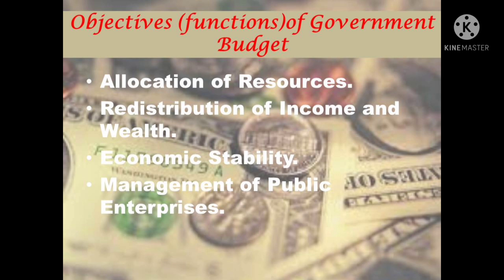Private enterprises always desire to allocate resources to those areas of production where profits are high. However, it is possible that such areas of production may not promote social welfare. Through budgetary policy, the government directs the allocation of resources in a manner such that there is a balance between the goal of profit maximization and social welfare. Production of goods injurious to health is discouraged through heavy taxation, while production of socially useful goods is encouraged through subsidies. Finally, the government has to reallocate resources in accordance with social and economic considerations in case the market fails or does so inefficiently.